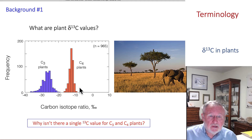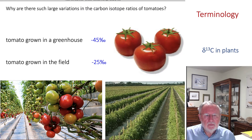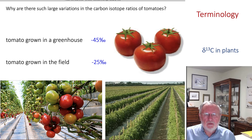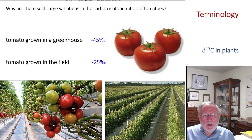Yes, the variation is real, because the precision of our analytical method is 0.1 to 0.2 parts per thousand. You might ask: if we do a class experiment and one group of students buys tomatoes grown in a greenhouse, and another group buys tomatoes grown in the field, you might observe very large differences in the carbon isotope ratios of those tomatoes. That doesn't reflect an inability to make a measurement — it tells you that something else is going on. Through the course of this lecture, we'll begin to probe and understand why we get carbon isotope ratio variation.